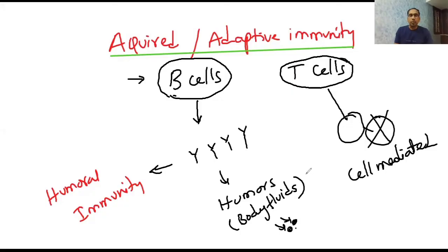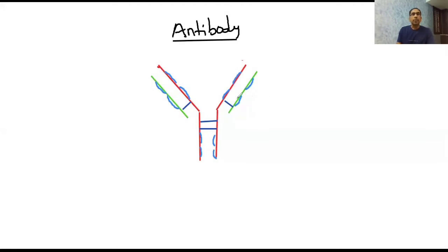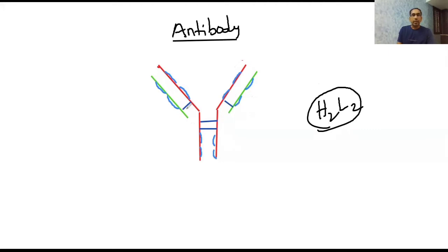Before we discuss humoral and cell-mediated immunity, let us see the structure of antibody. The shape of an antibody is Y-shaped. It consists of two heavy chains (H2) and two light chains (L2). These heavy and light chains are linked to each other by disulfide bonds, and disulfide bonds are also observed between the two heavy chains.